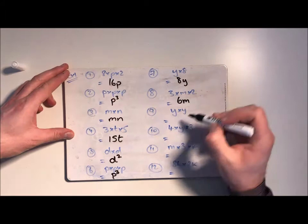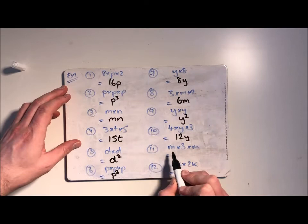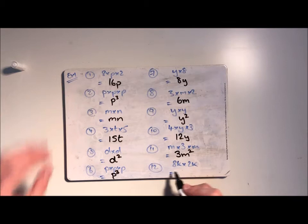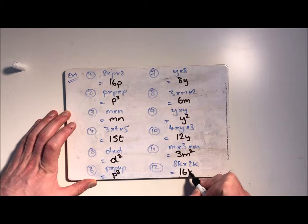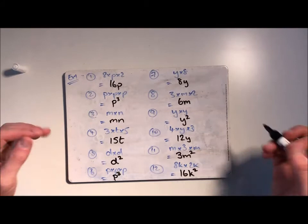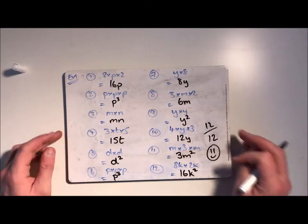y times y is y squared. 4 multiplied by y multiplied by 3 is 12y. m times m is m squared, with the 3 at the start would be 3m squared. Here we get to slightly more difficult ones where you've got numbers and letters together. Take the big numbers at the start, so that's 8 times 2 is 16, and then k times k is k squared. Okay, you can pause the video there if you need to and go through the answers, tick them off and give yourself a score out of 12. I got 12 out of 12.